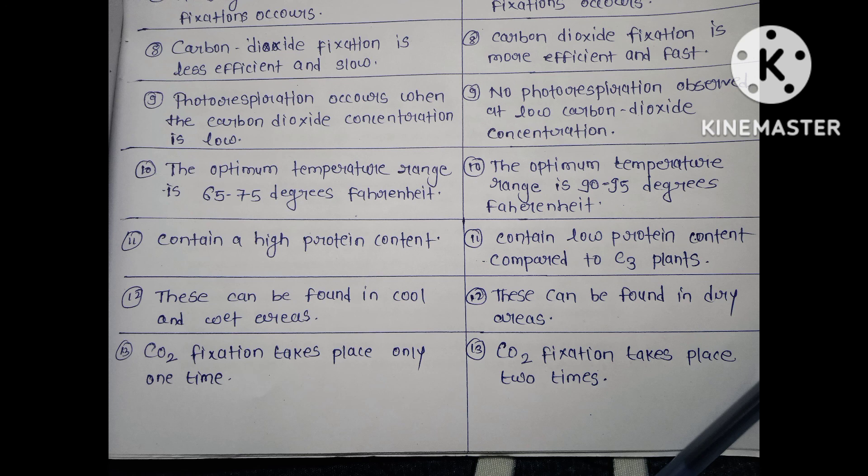In C3 plants, photorespiration occurs when carbon dioxide is low, whereas in C4 plants, no photorespiration is observed at low carbon dioxide concentration. In C3 plants, the optimum temperature for photosynthesis is 65 to 75 degrees Fahrenheit, whereas in C4 plants, it is 90 to 95 degrees Fahrenheit.